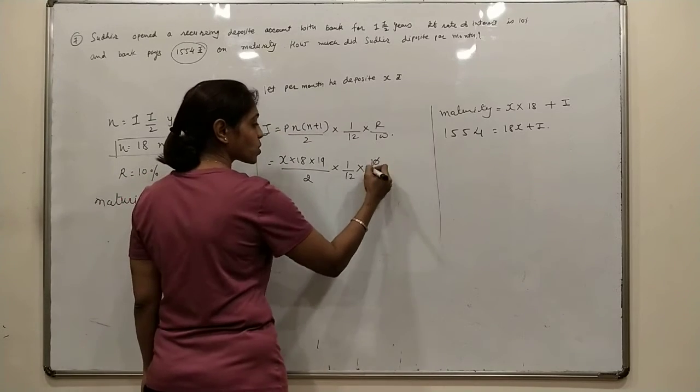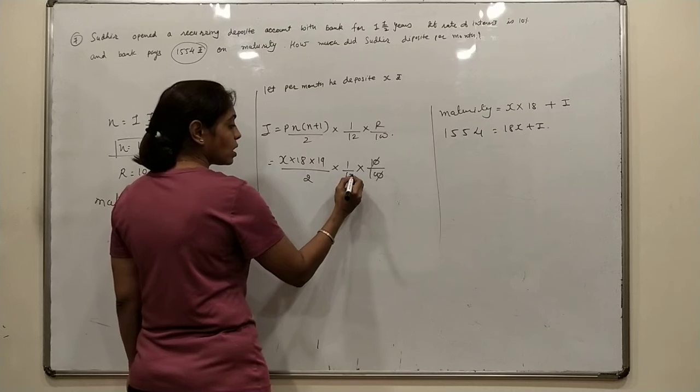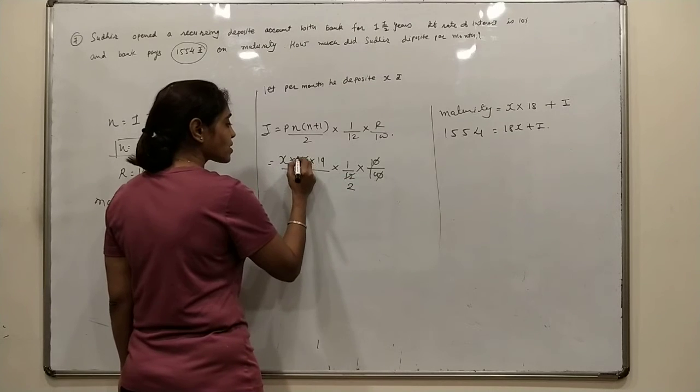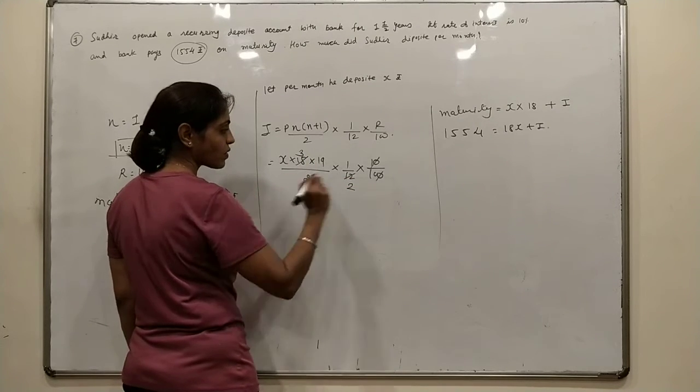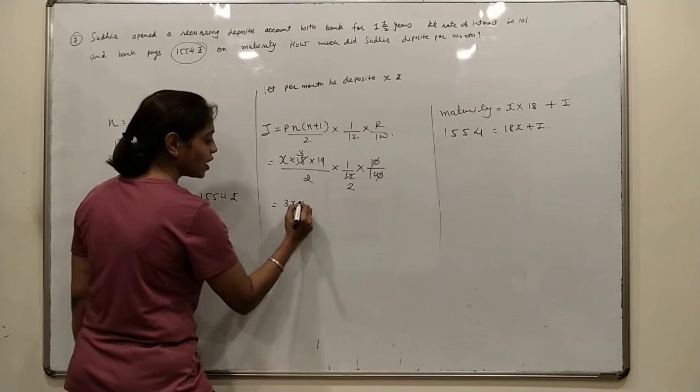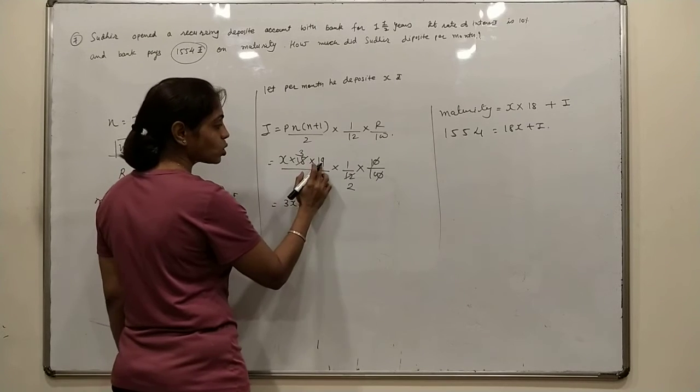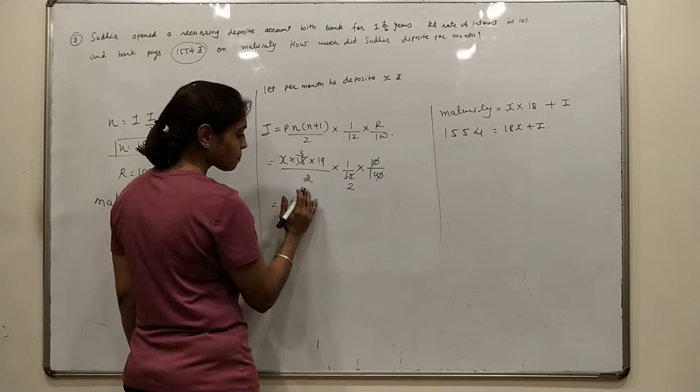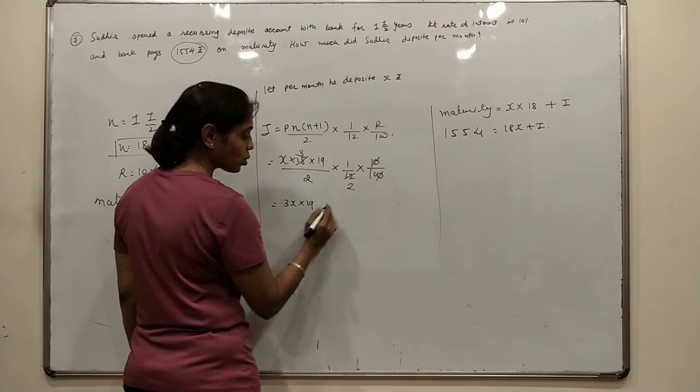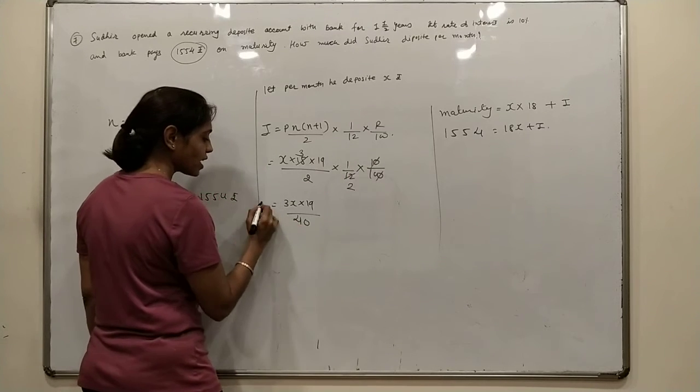Cancel the zeros. 6, 2, 6, 3. So 3x times 19 in the numerator, and the denominator is 4 times 10, which is 40. That's the interest.